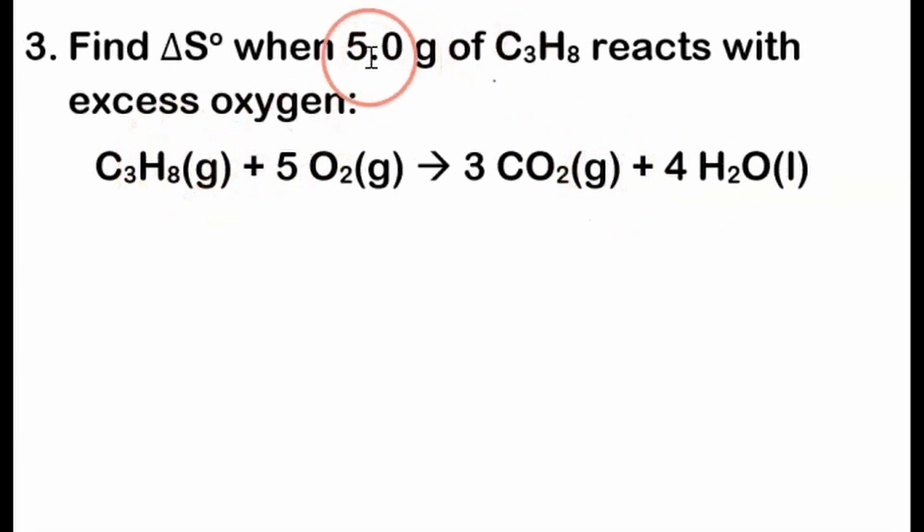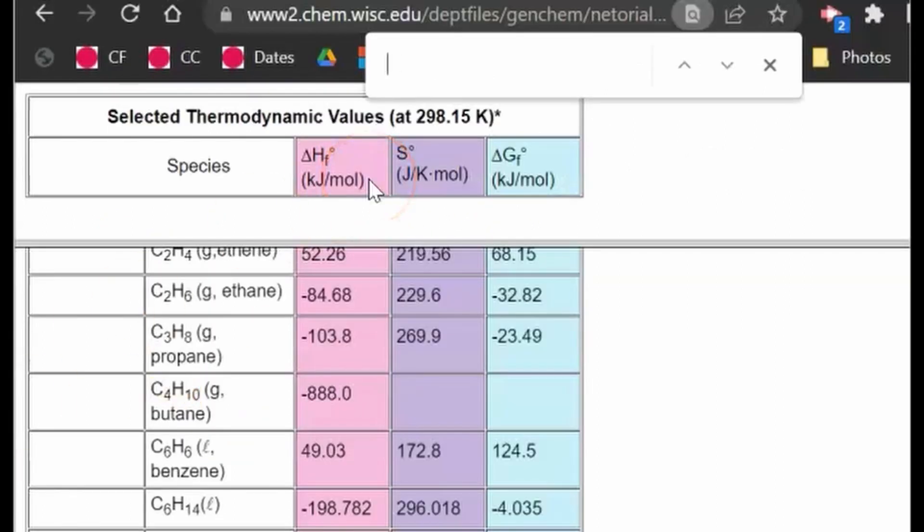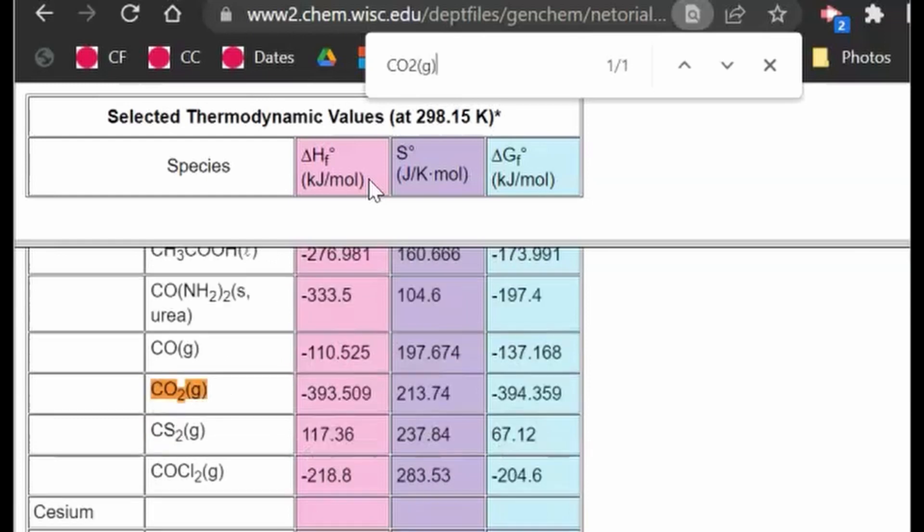So to do that, we're going to do just like what we did last time. To start off, we will calculate the molar change in entropy of the reaction by doing products minus reactants, so we'll start off with the products, 3 times whatever the entropy change of CO2 is. So CO2 gas.